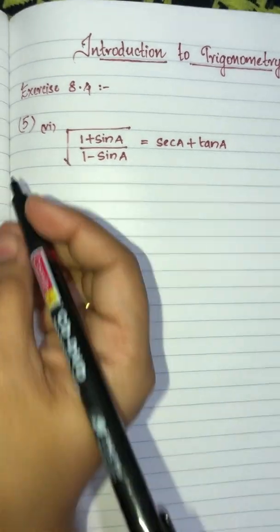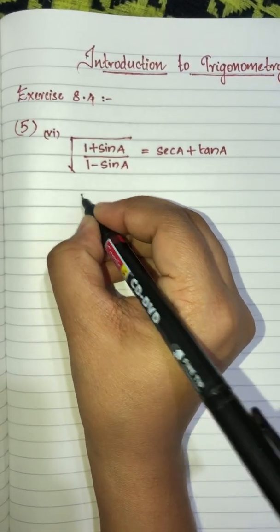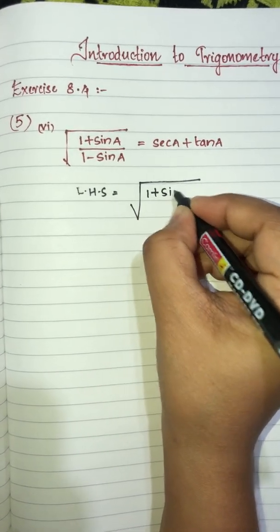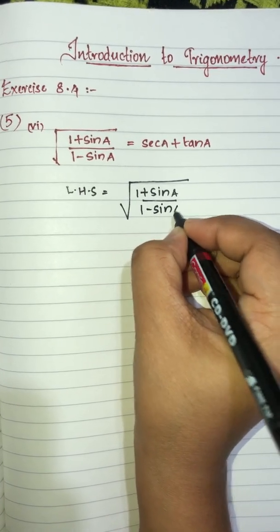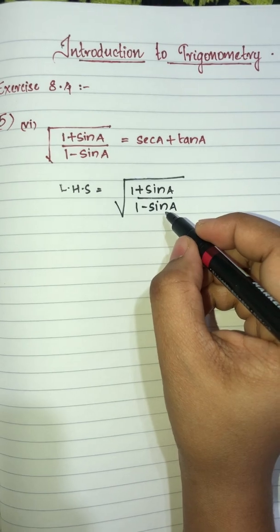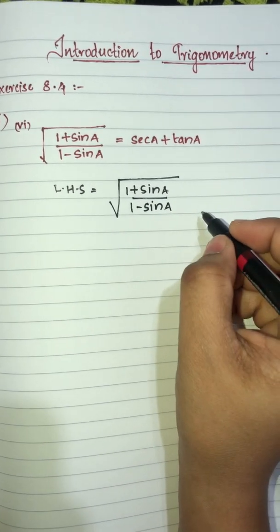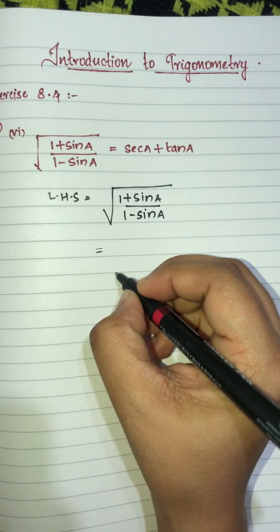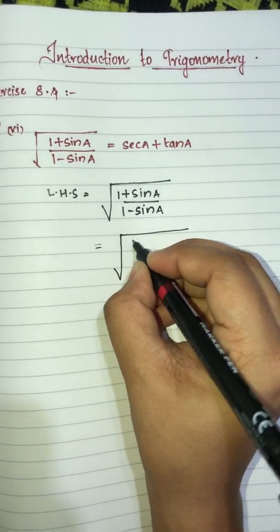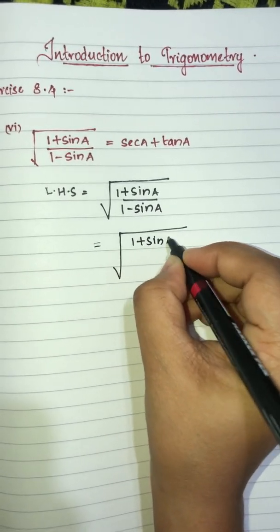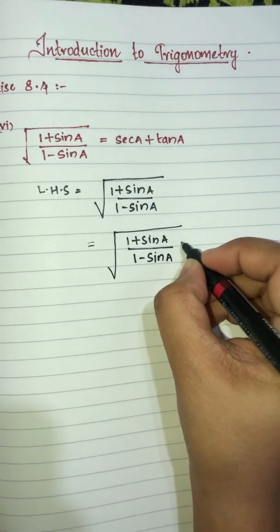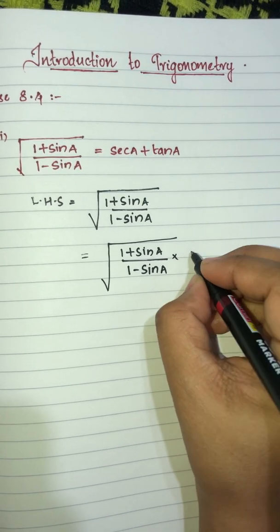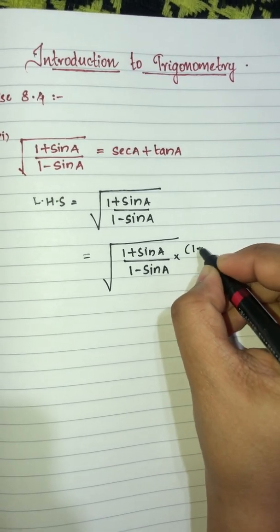We will take the root of (1 plus sin A) divided by (1 minus sin A). The denominator contains (1 minus sin A), which is the conjugate. Both numerator and denominator are multiplied by (1 plus sin A).